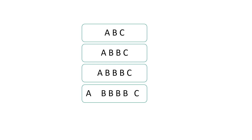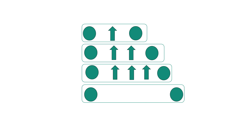If we identify the rule and the logic behind the pattern, we can easily complete it. What will come in the blank space in the last box? The rule is: 1 arrow between 2 circles, 2 arrows between 2 circles, 3 arrows between 2 circles. What will come next? 4 arrows between 2 circles.